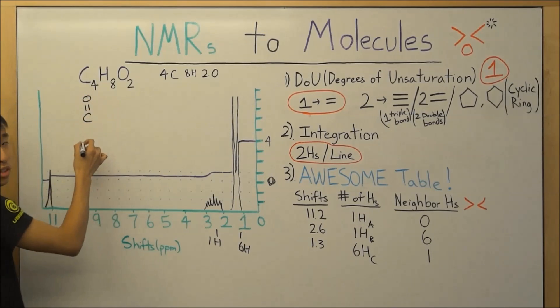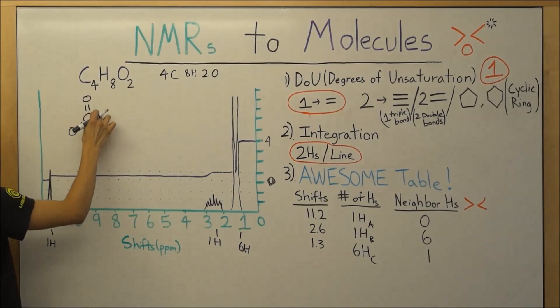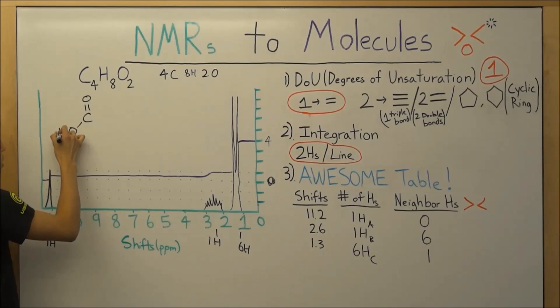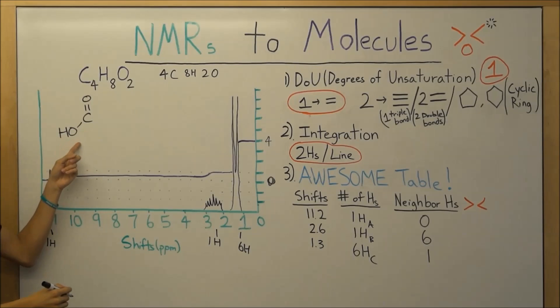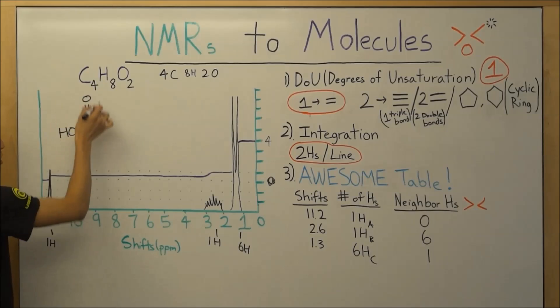So a carboxylic acid is pretty much just this, a carbonyl, so carbon-oxygen double bond, with the OH group over here. So that's a carboxylic acid.